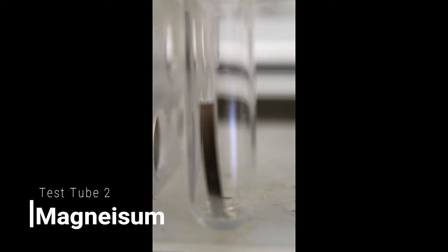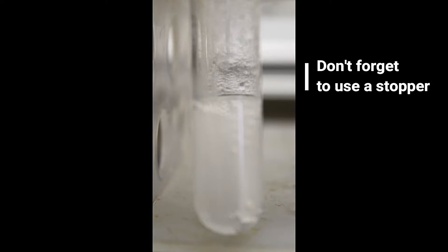Now we have our magnesium ribbon. Add our four milliliters of hydrochloric acid. Make sure we put on our stopper. Immediately we see a reaction occurring.